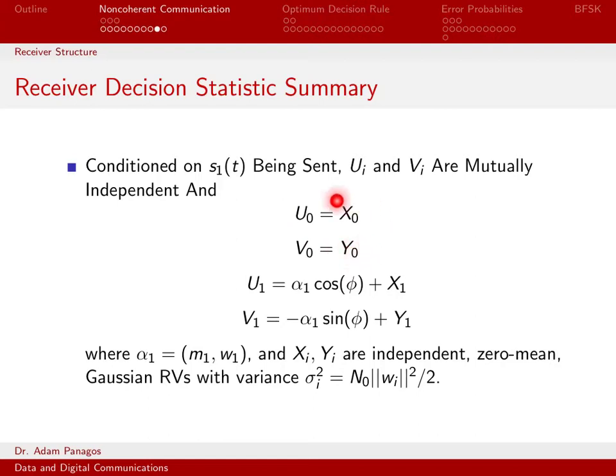When s1 of t is sent, my top two branches don't have a mean. They have a mean of 0 and all they have are noise. When s1 of t is sent, the bottom two branches do have a mean. This branch has a mean of alpha 1 cosine phi. This branch has a mean of minus alpha 1 sine of phi. They also have noise terms added onto them. Alpha 1 is the dot product between m1 and w1. The noise terms are all 0 mean, they're all independent, and their variance is given by this equation. On the top two branches, the variance is identical because I'm mixing with w0 in both. The variance on the bottom branches is identical because I'm mixing with the same w1 in both cases.